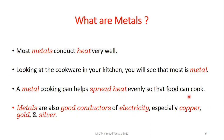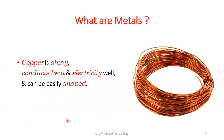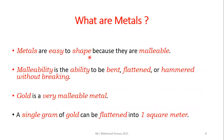Metals are also good conductors of electricity, especially copper, gold, and silver. As you can see, this is a copper wire. Copper is shiny, conducts heat and electricity well, and can also be easily shaped into many different shapes. Metals are easy to shape because they are malleable.